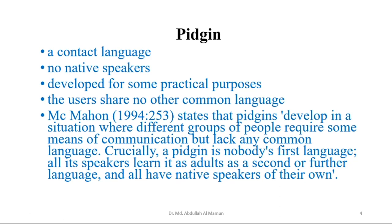Pidgin is a contact language — a language used only for contact or communication. It does not have any other functions. A Pidgin does not have native speakers. Pidgin is used by those persons who already have a mother tongue or native speaking language, but they use Pidgin additionally to contact with somebody who does not share their mother tongue. Pidgin has been developed for some practical purposes like contact and specific communication, not all types of communication that human beings have. The users of Pidgin share no other common language, which is why they depend on mixing elements from different languages for communication.